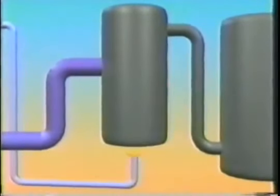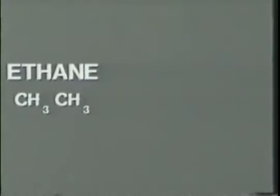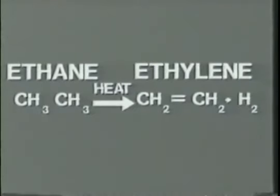The process involves heating the ethane in a thermal cracker where the high temperature and pressure cracks or breaks down the ethane molecules to produce mainly ethylene molecules.